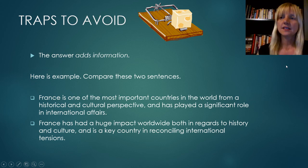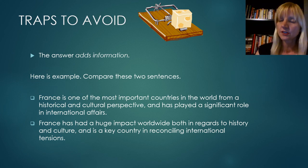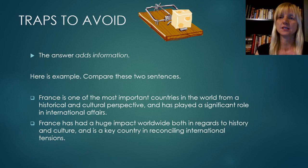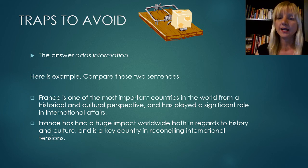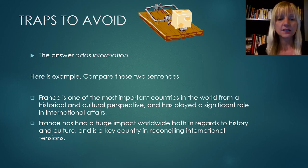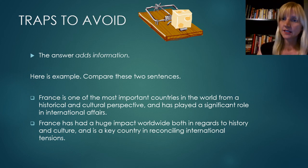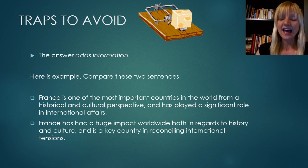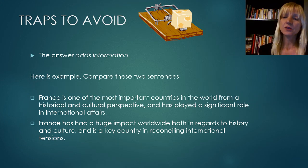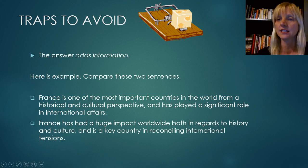The second trap: the answer choice adds information. If you see added information, this is not the correct answer. For example, the original sentence says: 'France is one of the most important countries in the world from a historical and cultural perspective, and has played a significant role in international affairs.' An incorrect paraphrase adds 'reconciling international tensions.' The original sentence doesn't say anything about international tensions — therefore, this is added information and it is not correct.